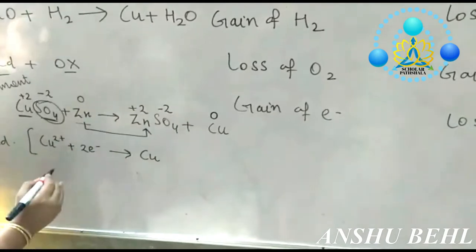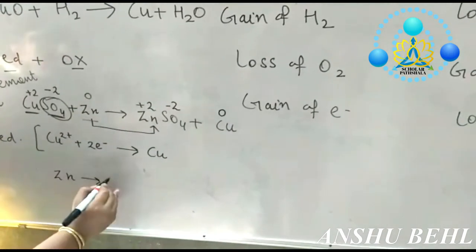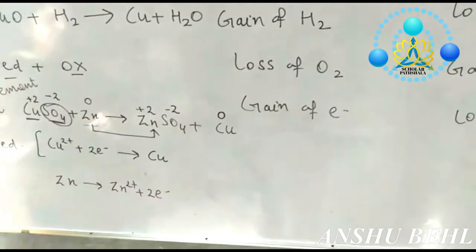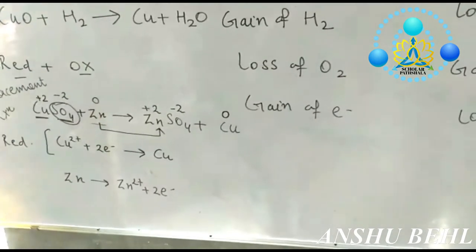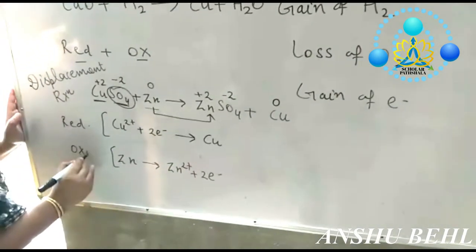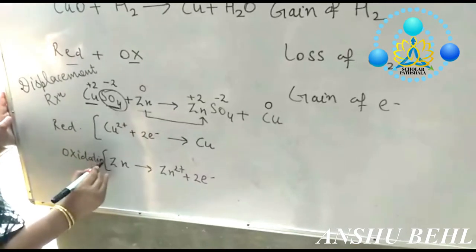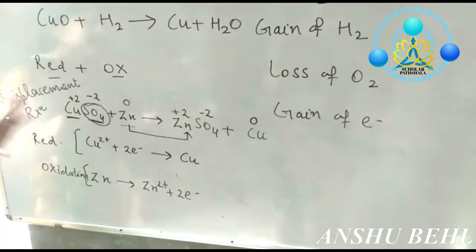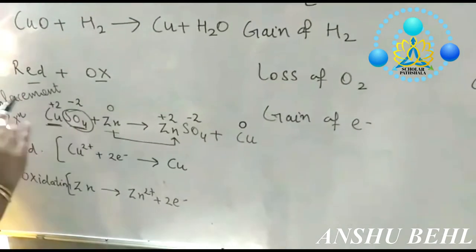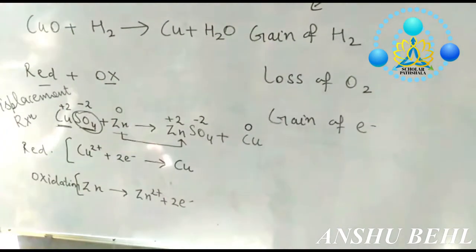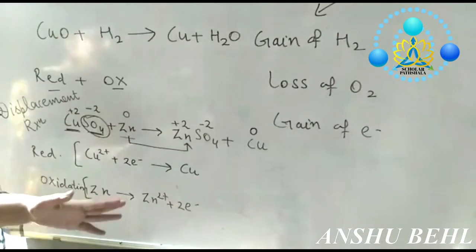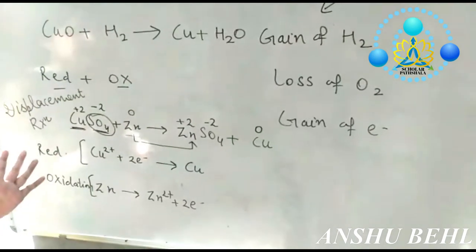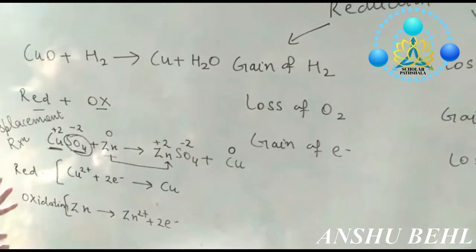Zinc metal is turning to zinc 2 positive after loss of 2 electrons. Zinc is losing electrons, and loss of electrons is termed as oxidation. So what we can see is that reduction and oxidation take place simultaneously. If one substance is losing electrons, the other is gaining electrons. If one is losing oxygen, the other is gaining oxygen. One is losing hydrogen, another is gaining hydrogen.